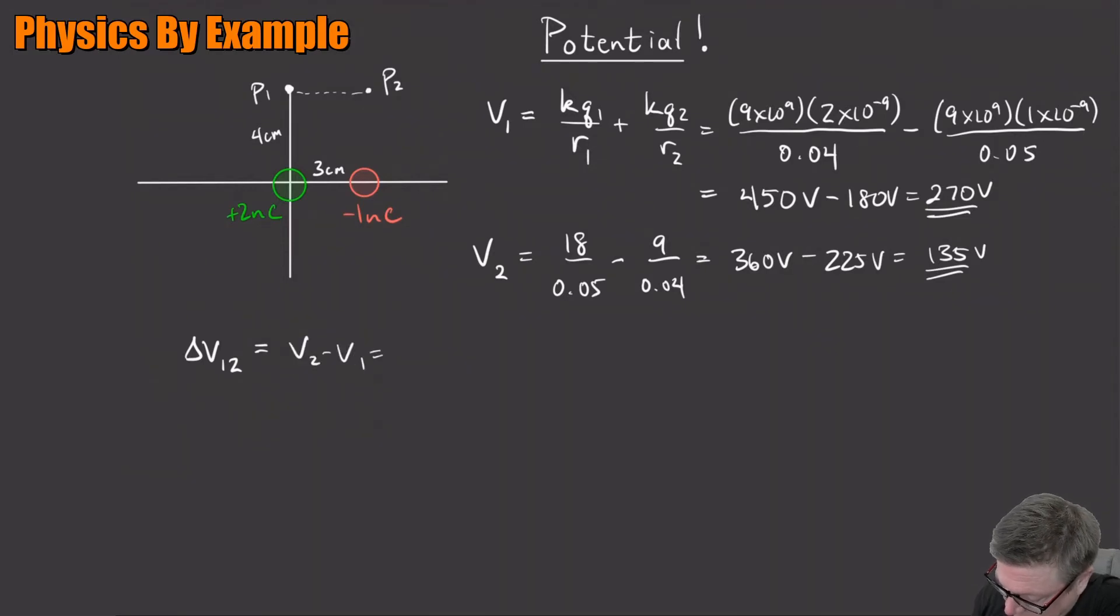So that is minus 135 volts, which kind of makes sense. How much has the voltage changed if you go from one to the other? It's gone down 135. It's gone from 270 to 135. That makes total sense.